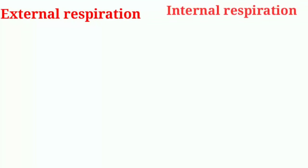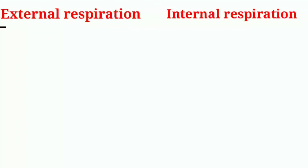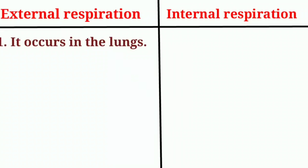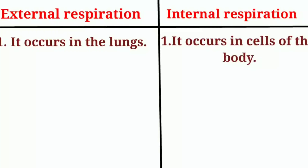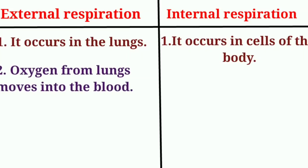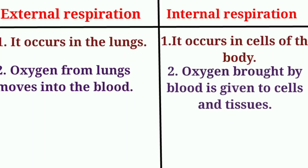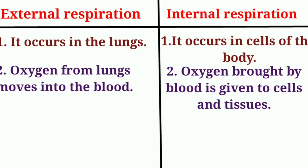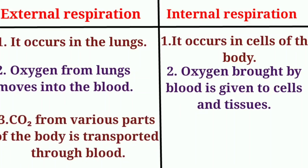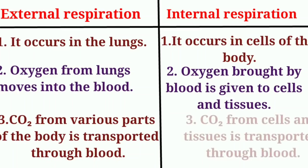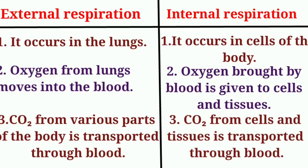Difference between external and internal respiration: External respiration occurs in the lungs; internal respiration occurs in the cells of the body. In external respiration, oxygen from the lungs moves into the blood; in internal respiration, oxygen brought by blood is given to cells and tissues. In external respiration, carbon dioxide from various parts of the body is transported through blood; in internal respiration, carbon dioxide from cells and tissues is transported through blood.